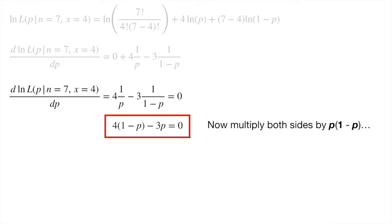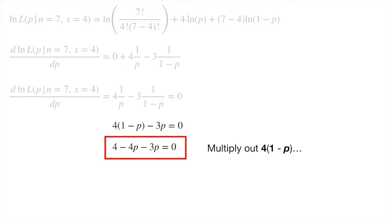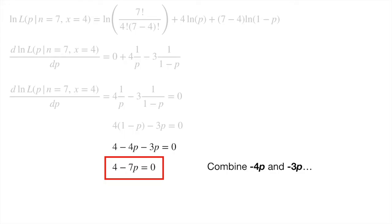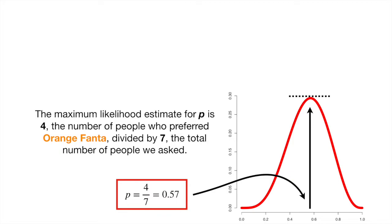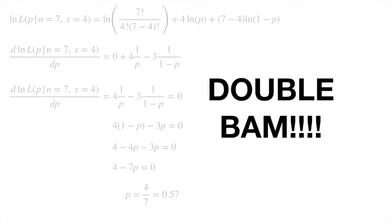Now multiply both sides by p times (1 minus p). Multiply out 4 times (1 minus p). Combine negative 4p and negative 3p. Then just solve for p. The maximum likelihood estimate for p is 4 — the number of people who preferred Orange Fanta — divided by 7, the total number of people we asked. Double bam!